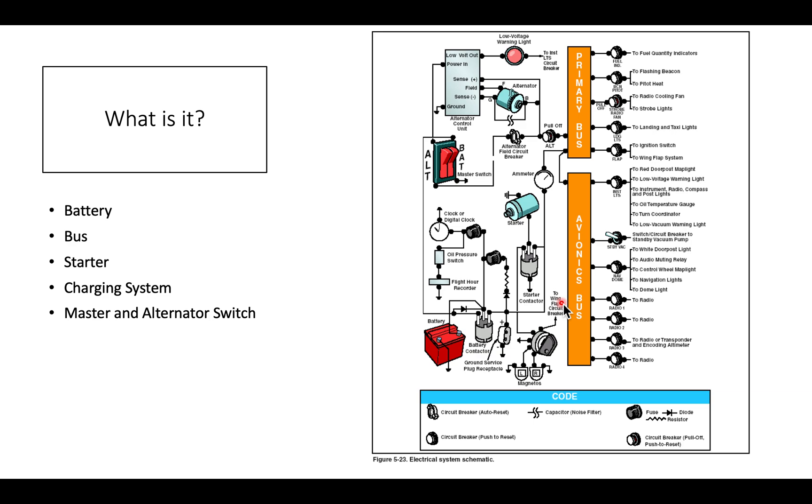So, to review what we've talked about, the electrical system is made up of a battery, a bus, a starter, a charging system, and a master and alternator switch.